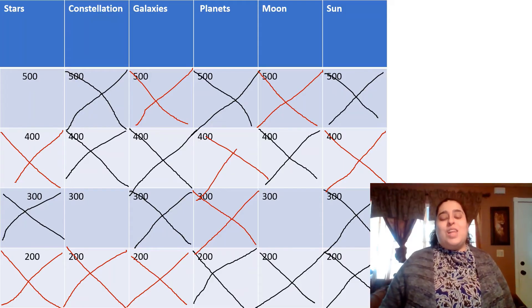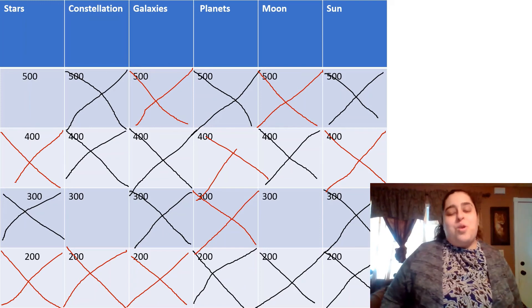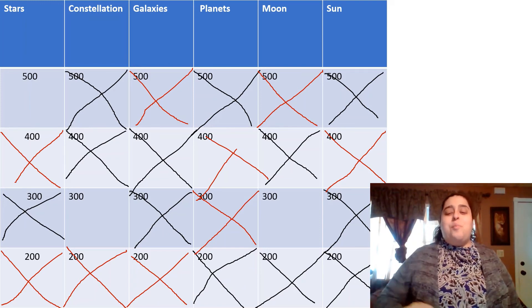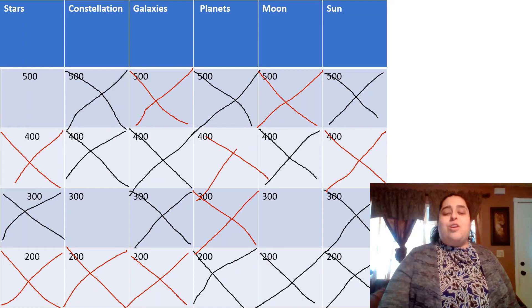We have three left, where are we going, what do I hear? One of each, we're gonna go, six left and I heard Moon for 300.